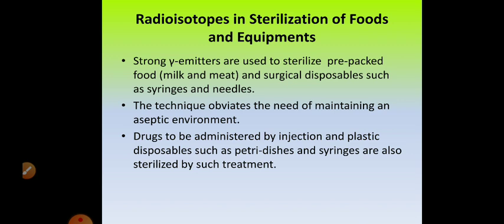Radioisotopes are also used for sterilization of foods and equipment. Gamma-emitting isotopes are used to sterilize pre-packed foods, meat, and milk. Surgical or disposable items like syringes and needles can also be sterilized by gamma radiation. Drugs to be administered by injection, and plastic disposables such as Petri dishes and syringes, can also be sterilized by this treatment. These are the various applications of radioisotopes, stable isotopes, and the tracer technique.